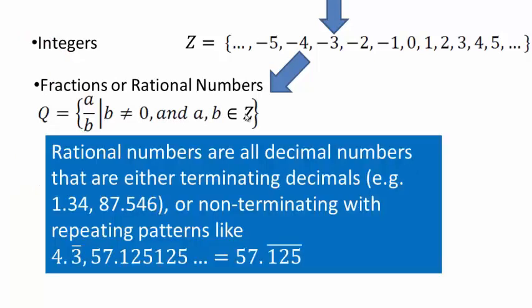We can also represent rational numbers as decimal numbers — we'll see how to do that in later lectures. They are either terminating decimals (a finite number of digits) or non-terminating with a repeating pattern, like 4.3 bar. So all decimal numbers with terminating notation or a non-terminating repeating pattern are called rational numbers.